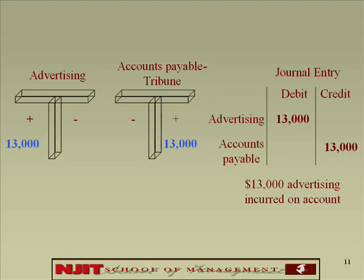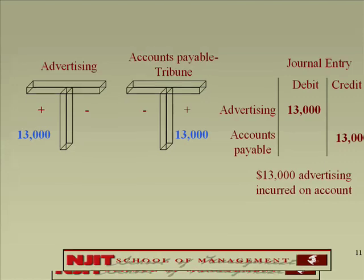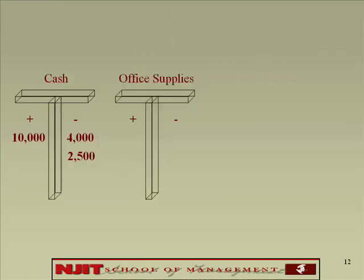Transaction five: you paid $6,000 for office supplies. Supplies is an asset. Two accounts impacted: cash and supplies. Cash has balances brought forward from prior transactions. Cash was minus $6,000 because the company paid money. Office supplies is plus $6,000 because their supplies increased by $6,000. The journal entry explains the transaction.